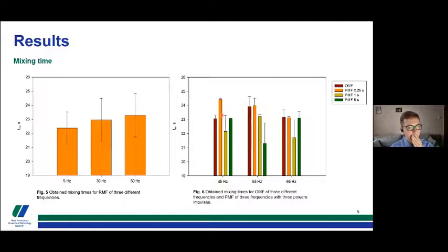For the oscillating magnetic fields and pulsating magnetic fields with the pulse of five seconds, two boundary frequencies of this magnetic field gave similar results, as we can see.